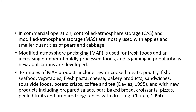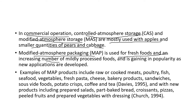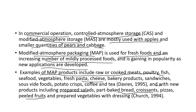In commercial operation, controlled atmosphere storage and modified atmosphere storage are mostly used for apples and smaller quantities of pears and cabbage. Modified atmosphere packaging is used for fresh foods and an increasing number of mildly processed foods. Examples of MAP products include raw or cooked meat, poultry, fish, seafood, vegetables, pasta, cheese, bakery items, sandwiches, chips, coffee, tea, and newer products such as prepared salads, part-baked breads, croissants, pizzas, pudding, and peeled fruits.